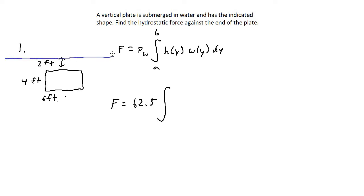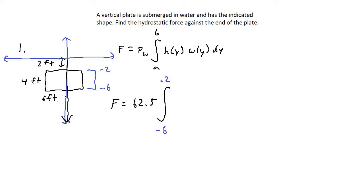The bounds A and B are the bounds of the plate. The plate goes from negative two all the way down four units to negative six. So our integration bounds are from negative six to negative two. For the height equation, we're always going down a Y distance below the x-axis, so the height equation is simply negative Y. Since this is a rectangle, the width is always a constant six feet, so the width equation is just six.